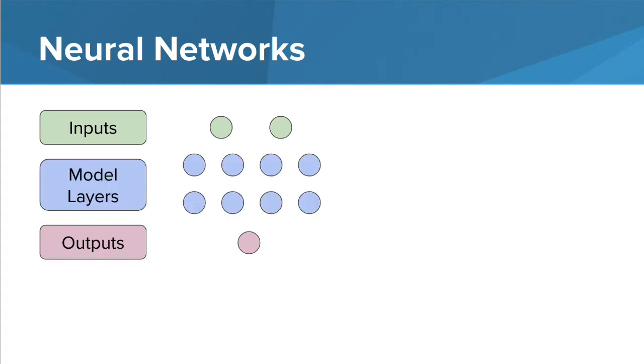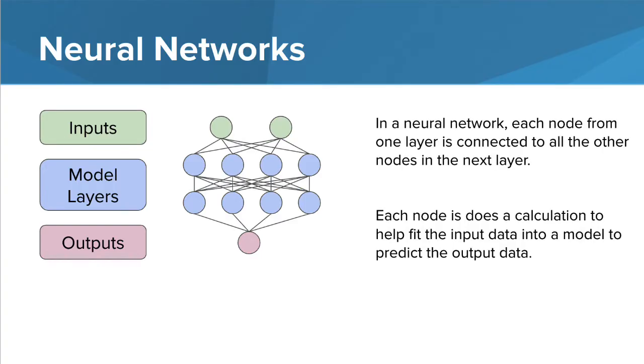In between are two layers, each composed of four nodes. In a dense neural network, each node from one layer connects to each node of the layer below. A node is essentially a computation point for the model. It takes the inputs and weighs them to produce an output along with a constant value known as a bias.